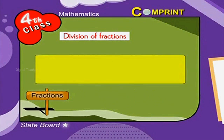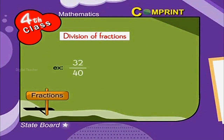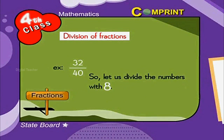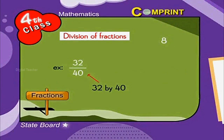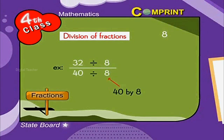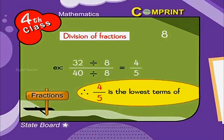To get the lowest terms of a fraction, we divide by the biggest common factor of the numerator and denominator. For example, 32 by 40: the common factors of 32 and 40 are 2, 4, and 8. So we divide by 8. 32 by 40 divided by 8 is written as 32 divided by 8, over 40 divided by 8, which results in 4 by 5. Therefore, 4 by 5 is the lowest term of 32 by 40.